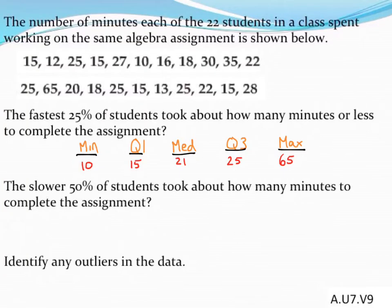Here we have a set of data which describes the number of minutes that 22 students spent on a math assignment. We're asked questions about the fastest 25% or the slower 50% of students. Because we're asked questions like this, it's probably going to be important to find information about our quartiles.